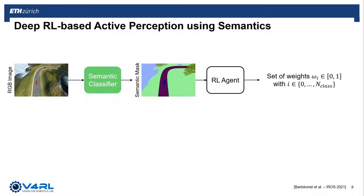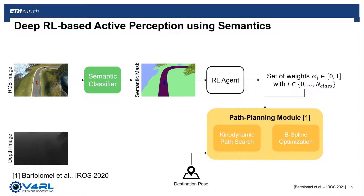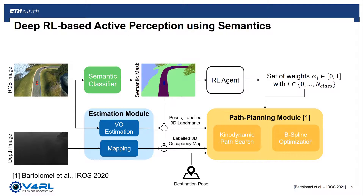The output of the policy, together with the destination pose, is then fed to the path planning framework by Bartolomei et al., modified in order to accommodate for the policy action space. The depth images, together with RGB images, are fed to the estimation module. The visual odometry estimator communicates the poses and the semantically labeled landmarks to the path planner, while the depth image is used by the mapper to generate a 3D occupancy map of the environment for obstacle avoidance. Finally, the path planning module outputs the trajectory that is fed to the controller of the robot.